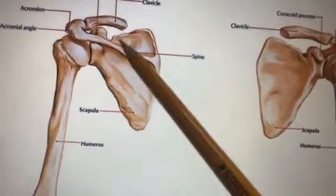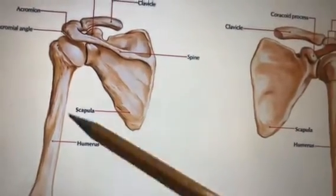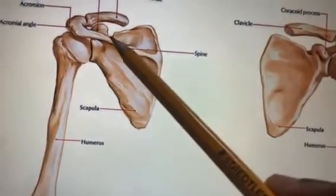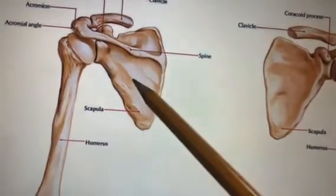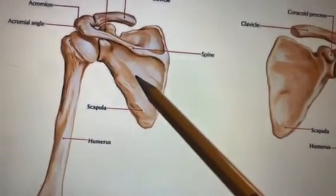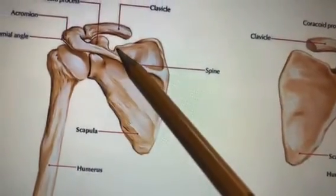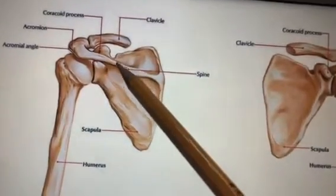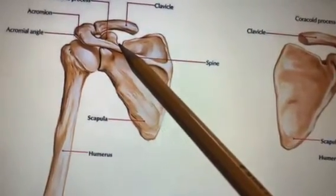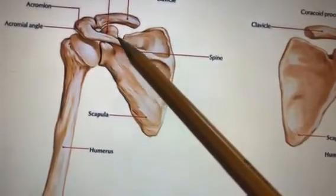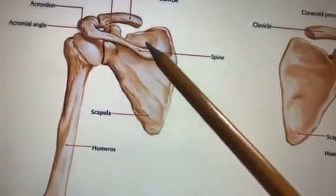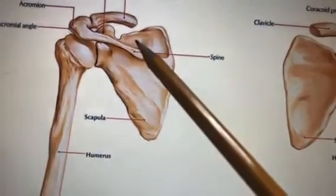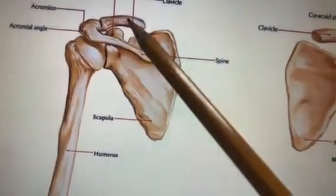Above the spine of the scapula is the supraspinous fossa, and below it is the infraspinous fossa. In the supraspinous fossa there is a muscle by the same name — supraspinatus. In the infraspinous fossa you have infraspinatus. There is a notch above the scapula called the suprascapular notch, and passing through it is the suprascapular nerve. This suprascapular nerve supplies both the supraspinatus and the infraspinatus.